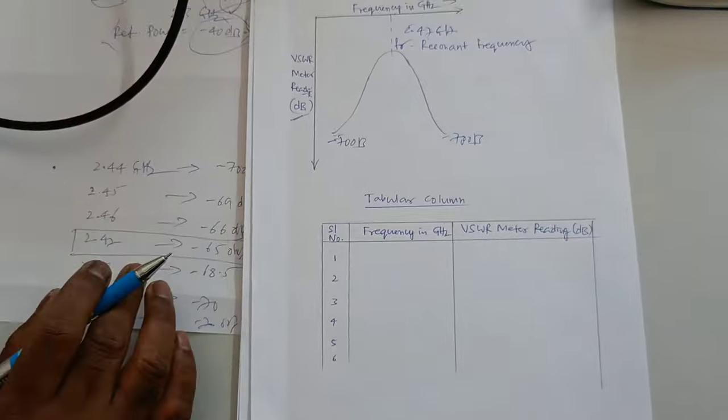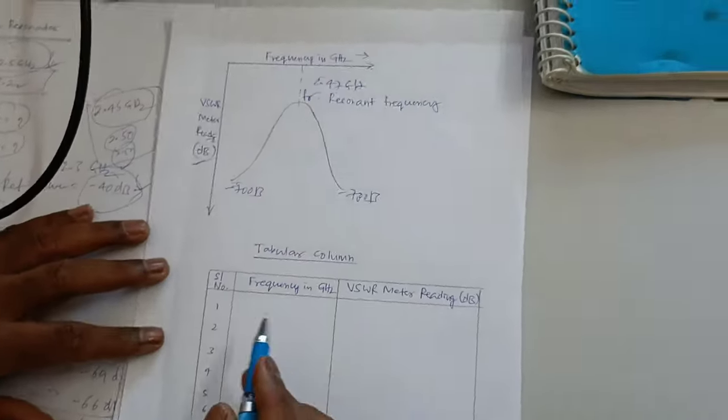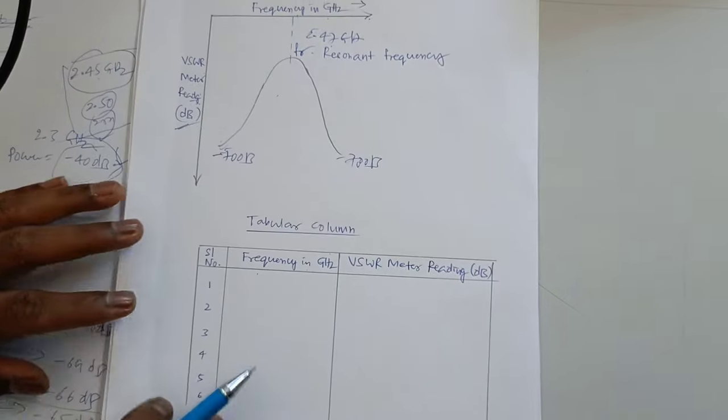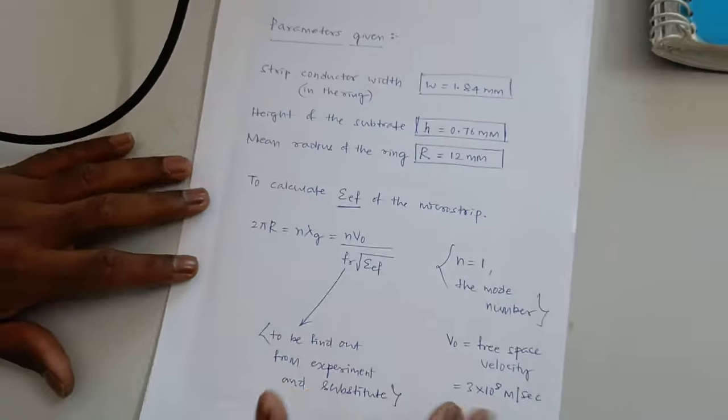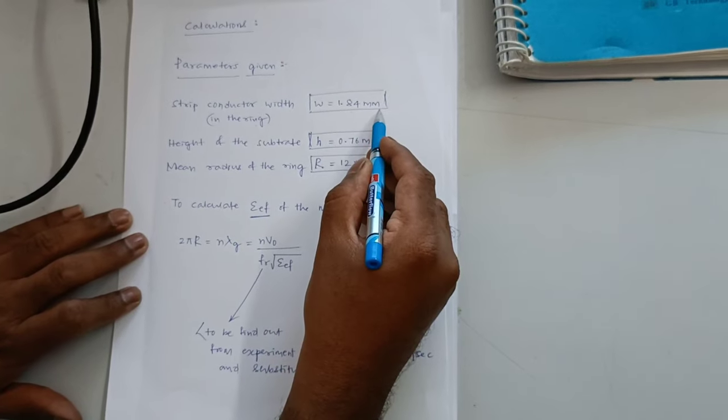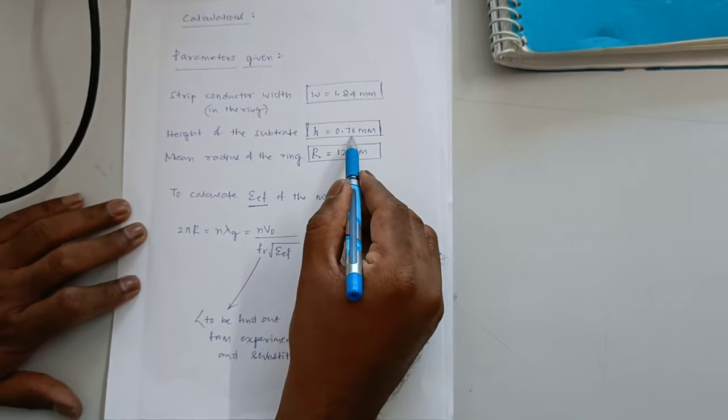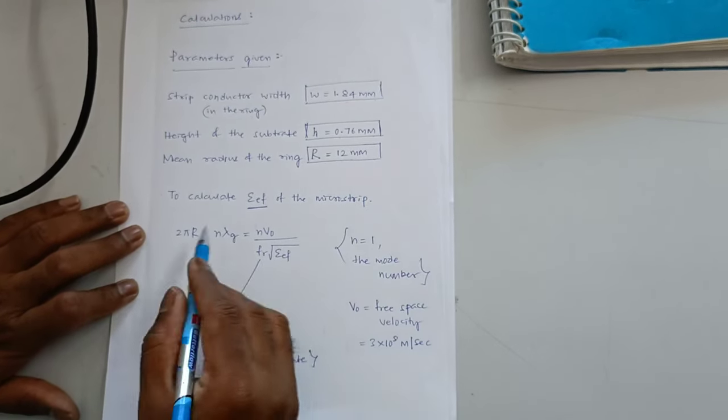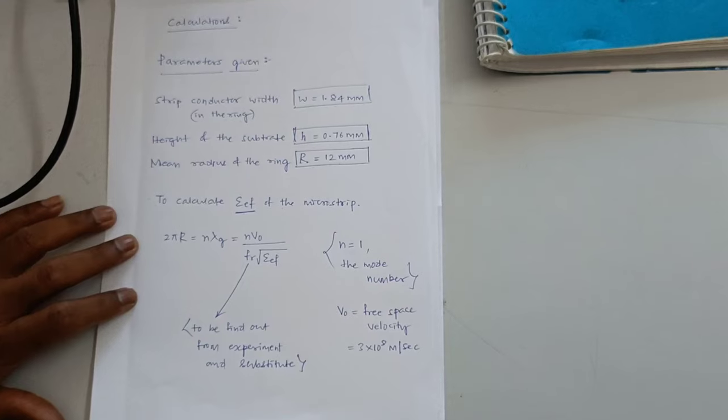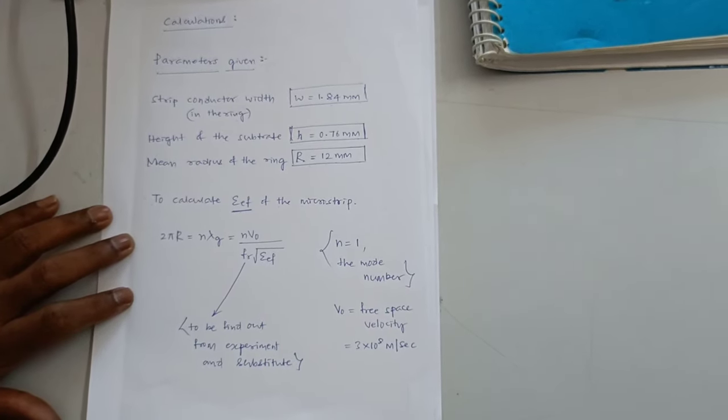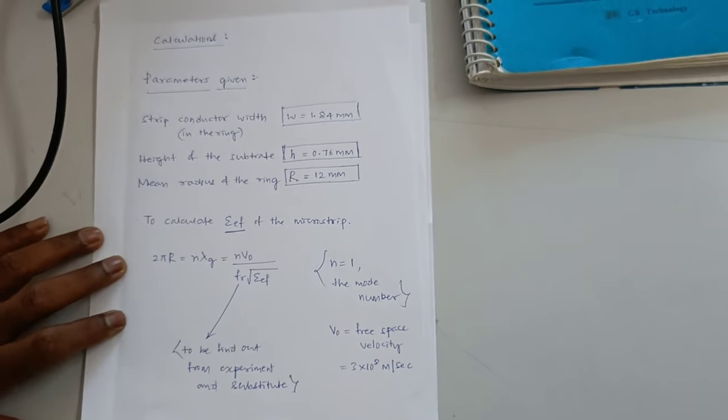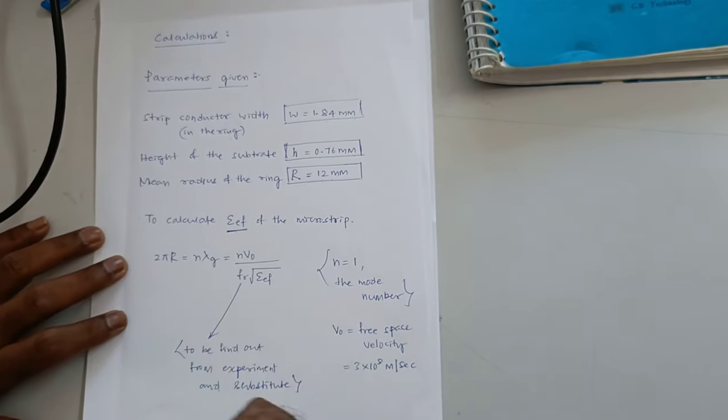To find out this relative dielectric constant, we have certain formulas. This is the tabulation. As I roughly shown you already. Frequency in Gigahertz. VSWR meter in dB. And this is the graph. The parameters given. The strip conductor width in the ring is W is equal to 1.84 mm. Height of the substrate, H is equal to 0.76 mm. Mean radius of the ring, R is equal to 12 mm. To calculate effect. Initially, we need to calculate the effective dielectric constant of the substrate. So that you can later calculate relative dielectric constant. Here, there are two media come into picture. One is dielectric media. Here is acting as one media. And another is a media of the substrate. So we have to calculate initially the effective dielectric constant. Next, go for the relative dielectric constant.